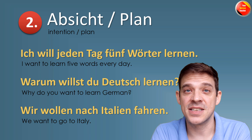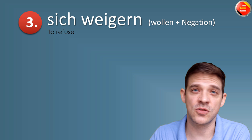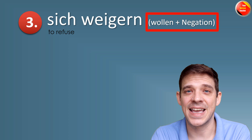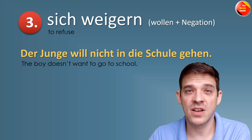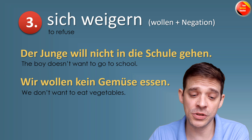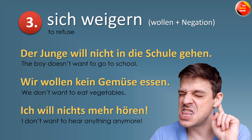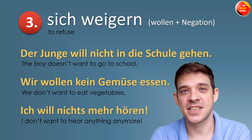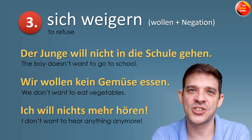Nummer 3: Sich weigern — to refuse, to say no to something. This is always wollen plus negation. Zum Beispiel: Der Junge will nicht in die Schule gehen — the boy doesn't want to go to school. Oder: Wir wollen kein Gemüse essen — we don't want to eat vegetables. Oder: Ich will nichts mehr hören — I don't want to hear anything anymore.